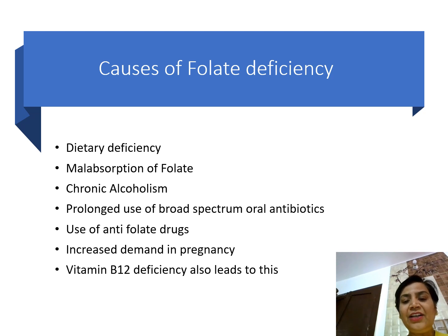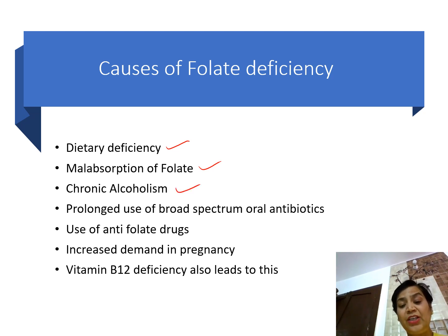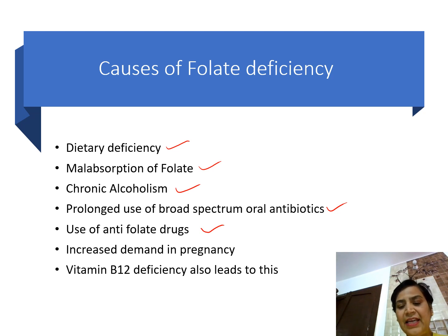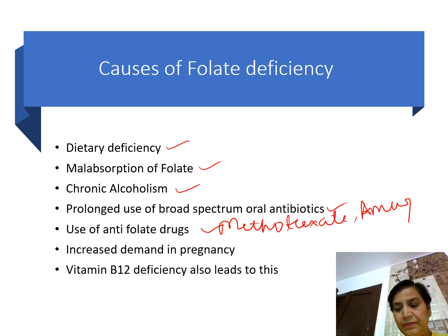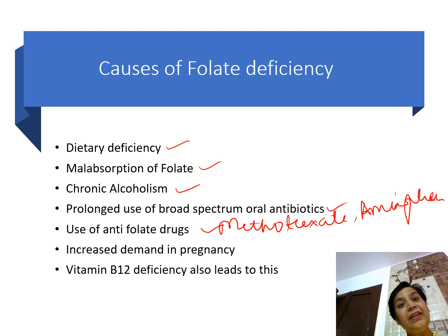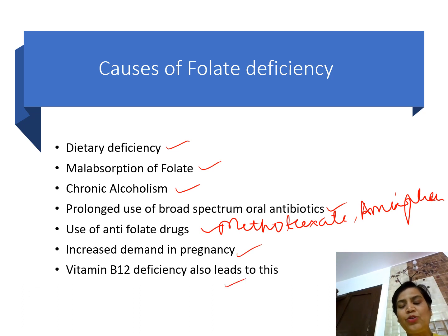What are the causes that can lead to deficiency of folic acid? First is obviously deficiency in the diet. Second is malabsorption of folic acid. Chronic alcoholism can also lead to deficiency. Prolonged use of broad spectrum oral antibiotics like sulfonamides can also lead to deficiency. Use of antifolate drugs — which are anti-cancerous drugs like methotrexate and aminopterin — is important; methotrexate is a competitive inhibitor of dihydrofolate reductase. Obviously in pregnancy the demand is more. Lastly, vitamin B12 deficiency can also lead to folic acid deficiency, because one particular reaction requires folic acid as well as B12.